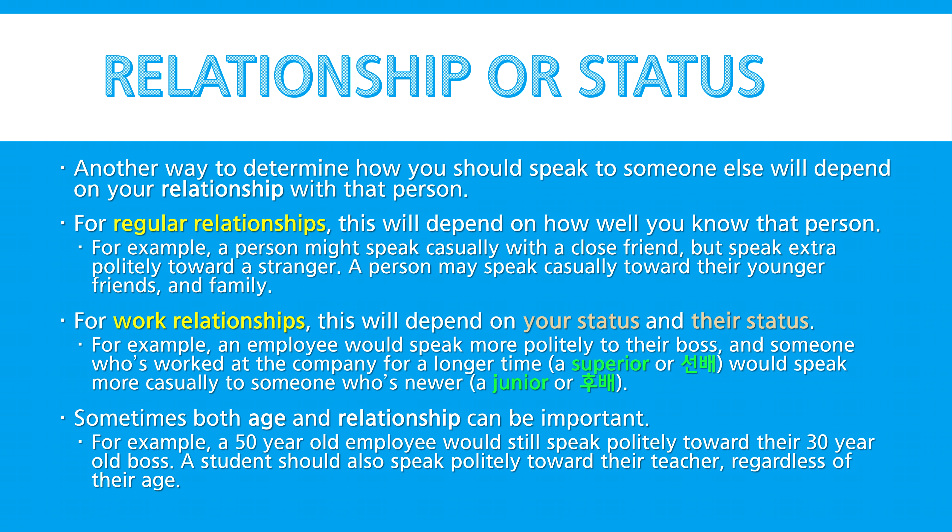Next, we have 하여체 — this is commonly used when speaking informally, so anytime you're not formal, and it can be a polite form when used correctly; this form ends with 요. And last but not least, 해체 — this is commonly used when speaking casually, such as with your close friends.